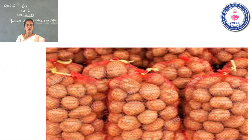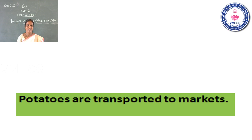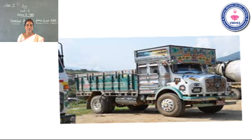Look at this picture, look at the slide. You can easily understand. What did you see in this picture? From this picture we learnt the potatoes are packed. Then what is the next action? Potatoes are transported to the market. Look at this slide — you can easily understand. The potatoes are transported to the market.